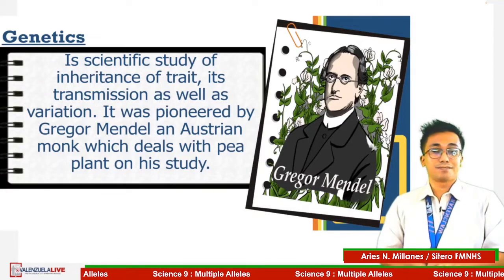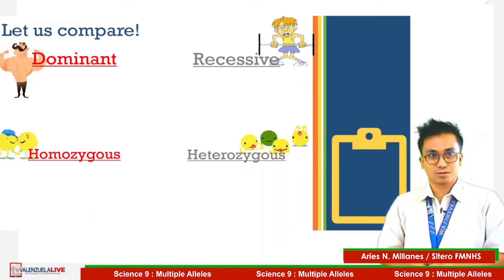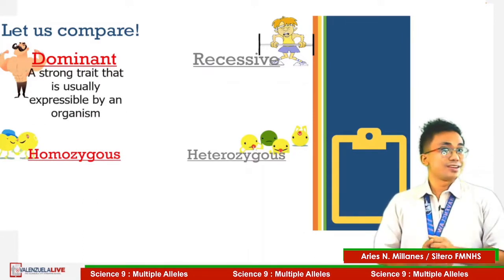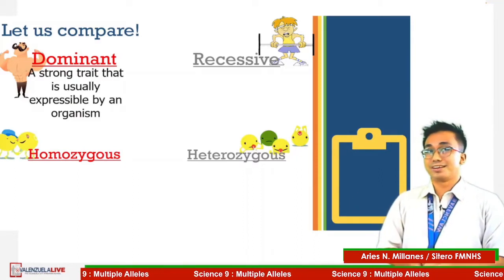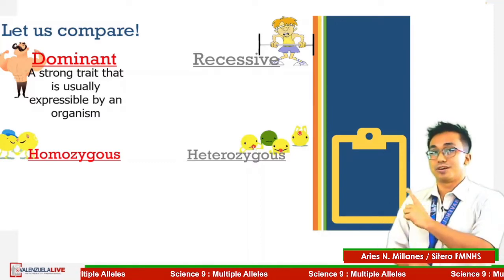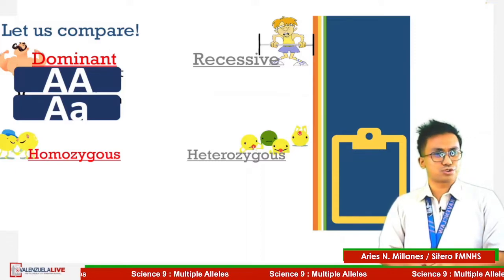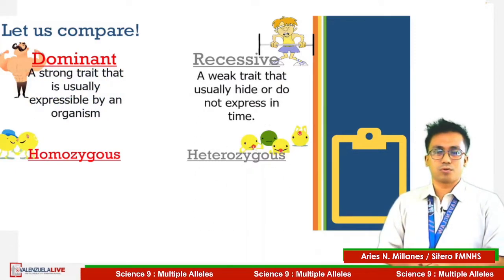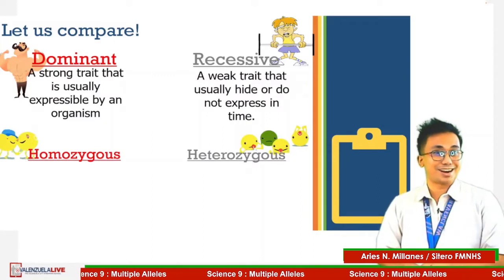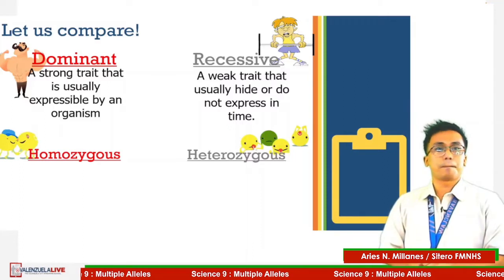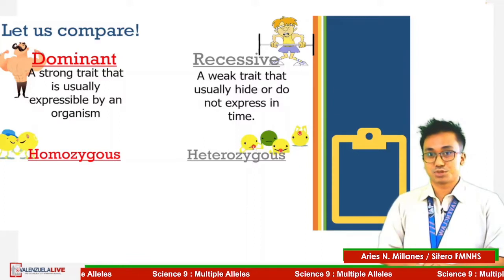We also defined the following terms: dominant traits, which is a strong trait that is usually expressed by an organism — we usually write it with a capital letter. If there is a strong trait, there is also a weak trait called recessive. It does not express unless partnered with another recessive trait. We write recessive trait in small letters.